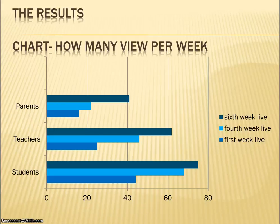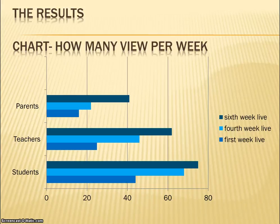The results: this chart shows how many views per week the site received. The first week, around 20 teachers viewed the site, students about 40, and parents less than 20, based on a survey. By the fourth week it had gained more views, and by the sixth week even more. The success rate was going up every week because more was being added to the website, and teachers, students, and parents were finding the advantages of using the site to gain ideas.